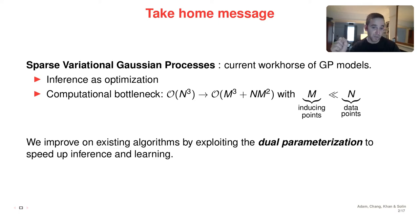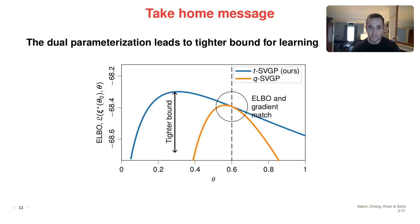We improve on existing algorithms for sparse variational Gaussian processes by exploiting a Dual Parameterization, and that leads to speed up in both inference and learning. Our Dual Parameterization leads to a tighter bound for learning. When we turn inference as optimization, we typically maximize a lower bound to an objective, the marginal likelihood, and the tighter this lower bound, the better you're gonna go optimizing it.